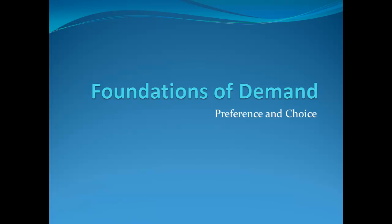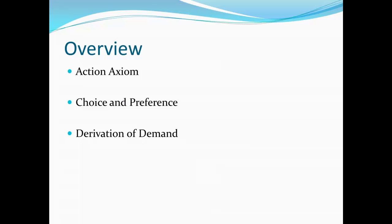In this section, we're going to talk about the foundations for demand, getting a little bit deeper into preference and choice, and really getting into why the demand curve slopes downward. As an overview, first we're going to talk about the action axiom, which is really the foundation for economic science. Secondly, we'll turn toward choice and preference and how these relate to action. And finally, we will derive demand using those things we've learned.